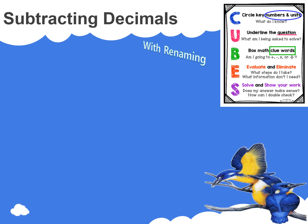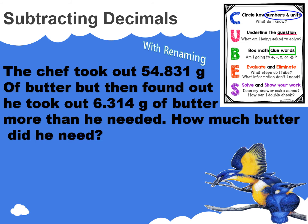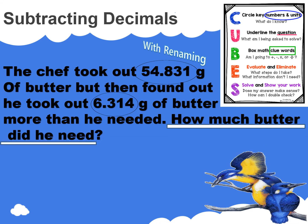Let's do another subtracting decimals problem, this time with renaming. Read the problem with me. The chef took out 54 and 831 thousandths grams of butter, then found out he took out 6 and 314 thousandths grams of butter more than he needed. How much butter did he need? Circle the numbers. Underline the question. Box the clue words. Now evaluate — we know the chef took out more butter than he needed. This scenario is indicating that we should subtract. We will use a subtraction number sentence to solve.